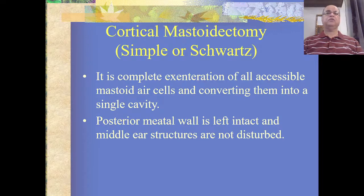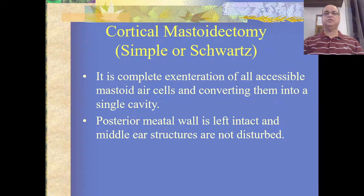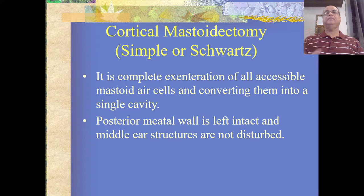As discussed in the previous session — the link is in the description box — mastoid explorations or mastoid surgeries are divided into two main groups: canal wall up procedures and canal wall down procedures. In canal wall up procedures, the posterior meatal wall remains intact.